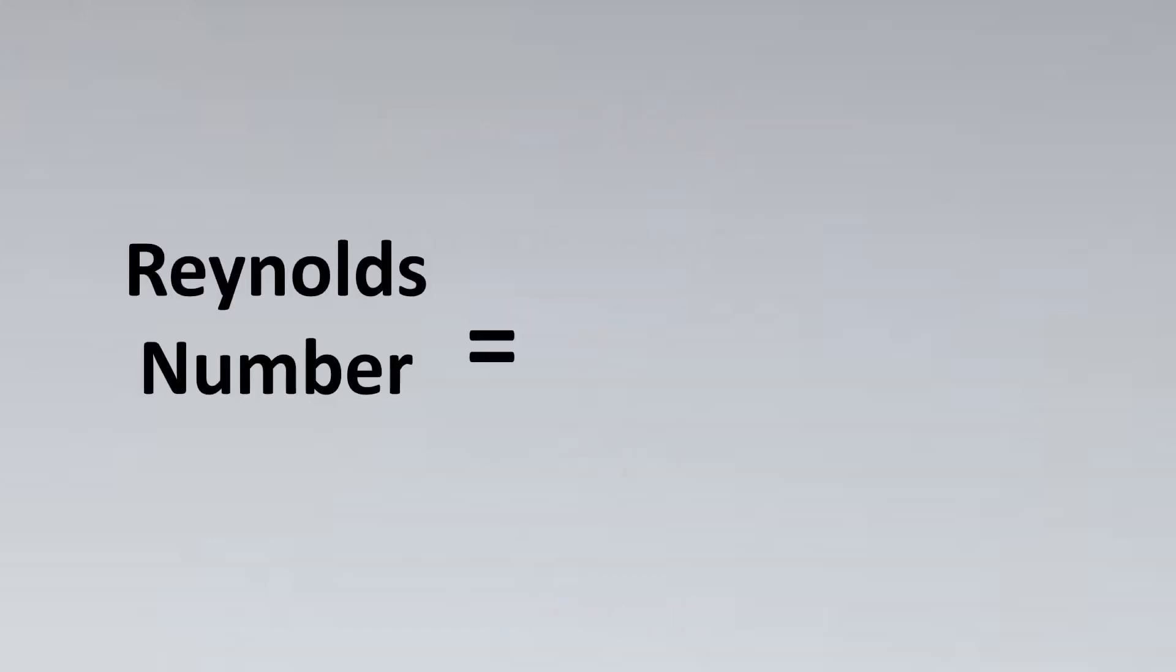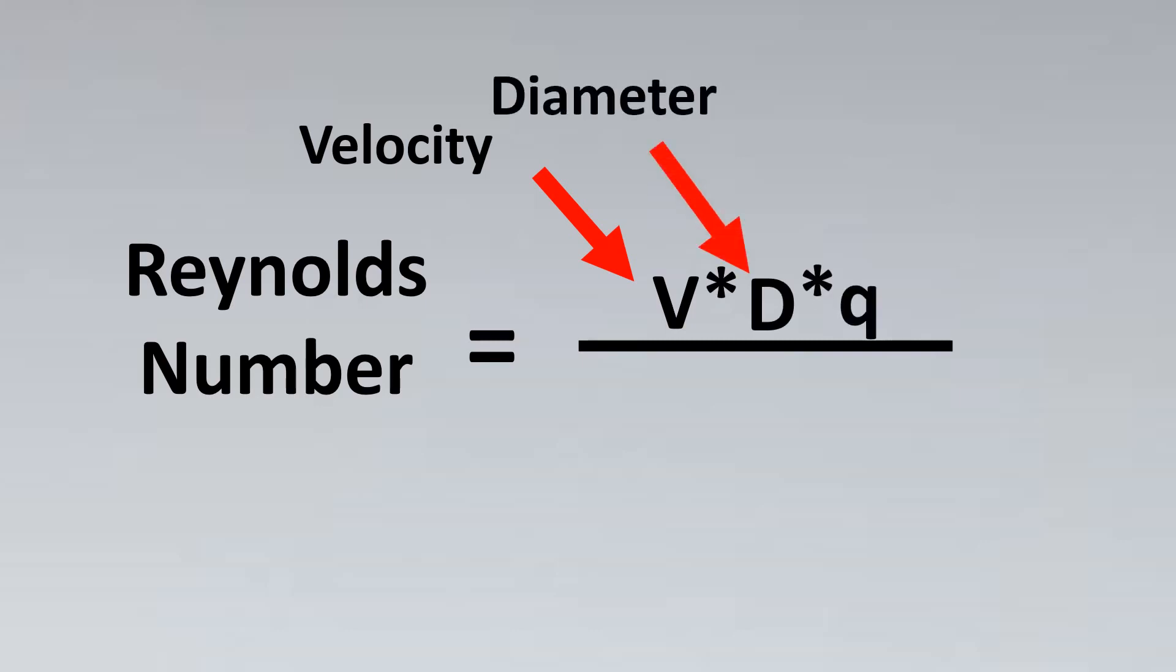We look into the Reynolds number equation. It is an amazing equation developed by Sir Reynolds. In this, the velocity stands for V, D stands for diameter and this is our density. And the denominator has the coefficient of viscosity.